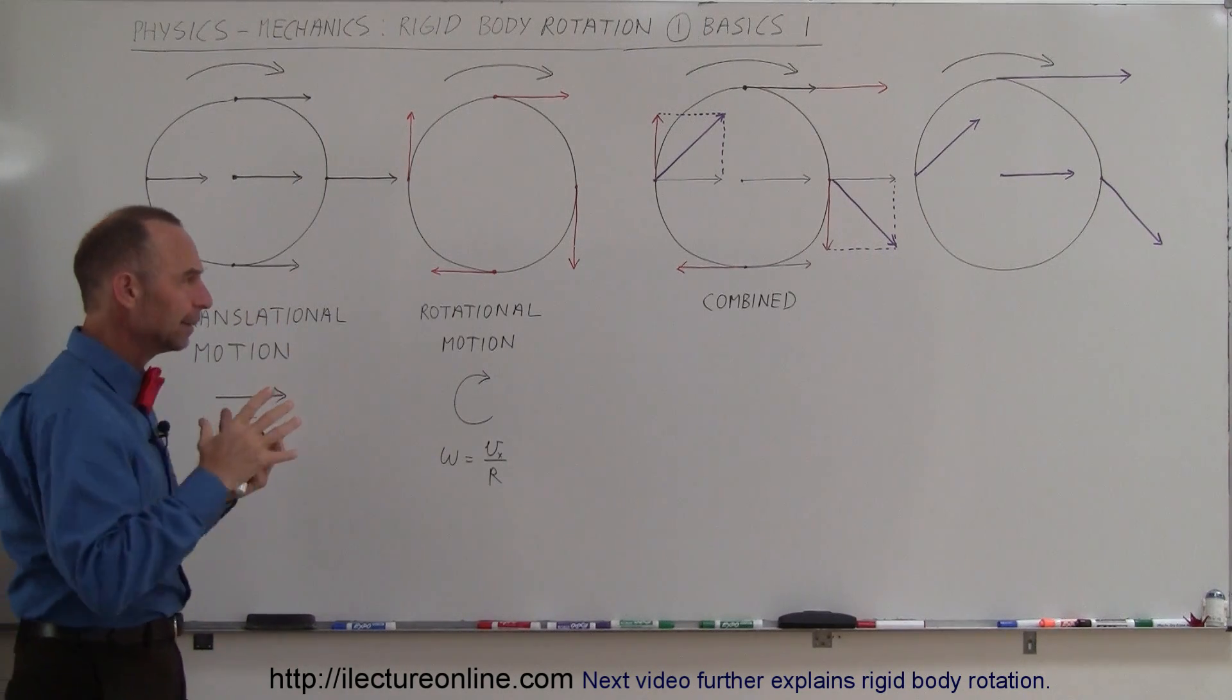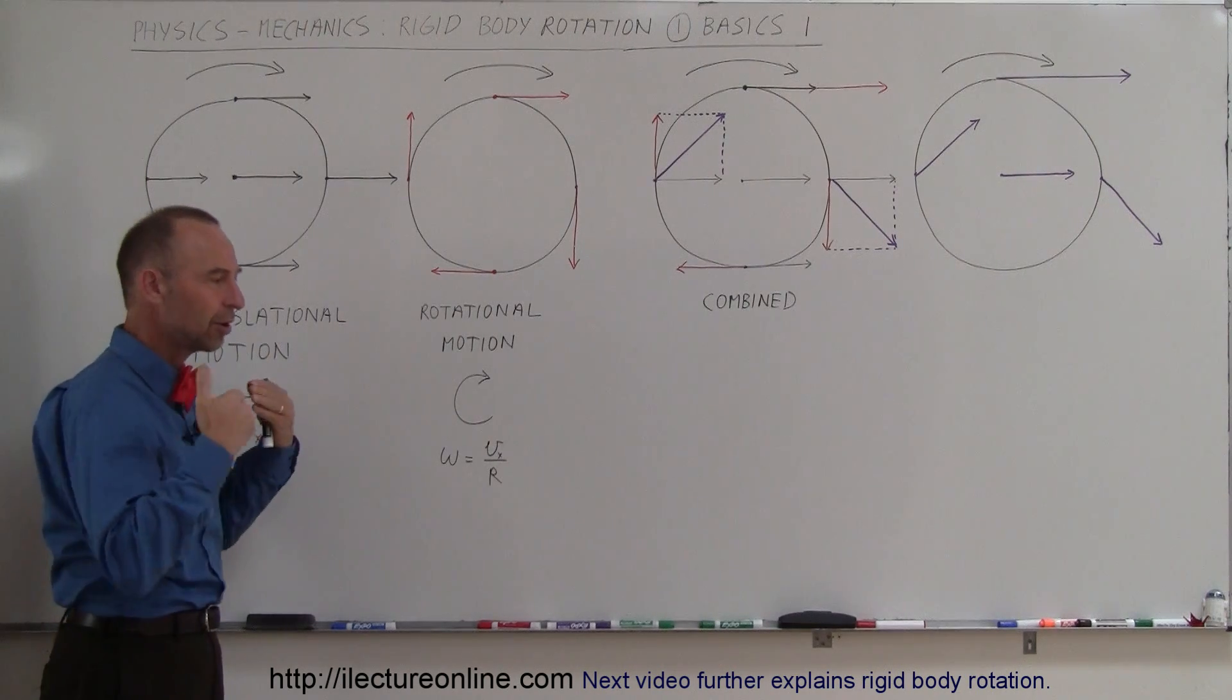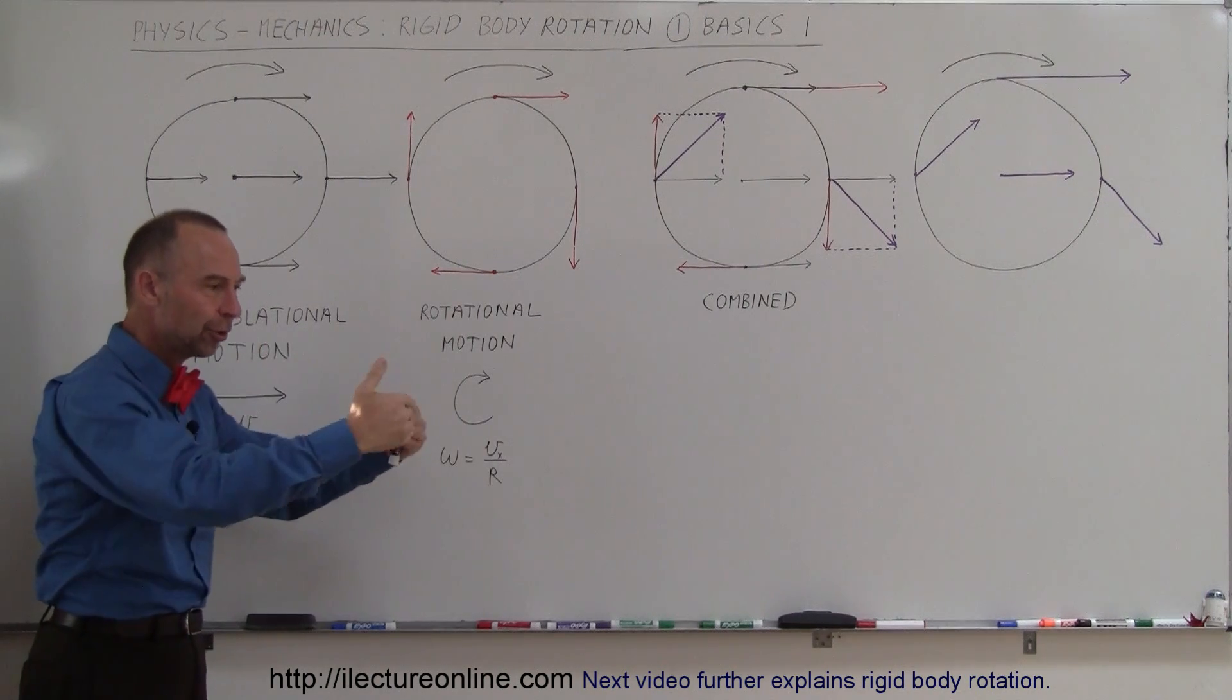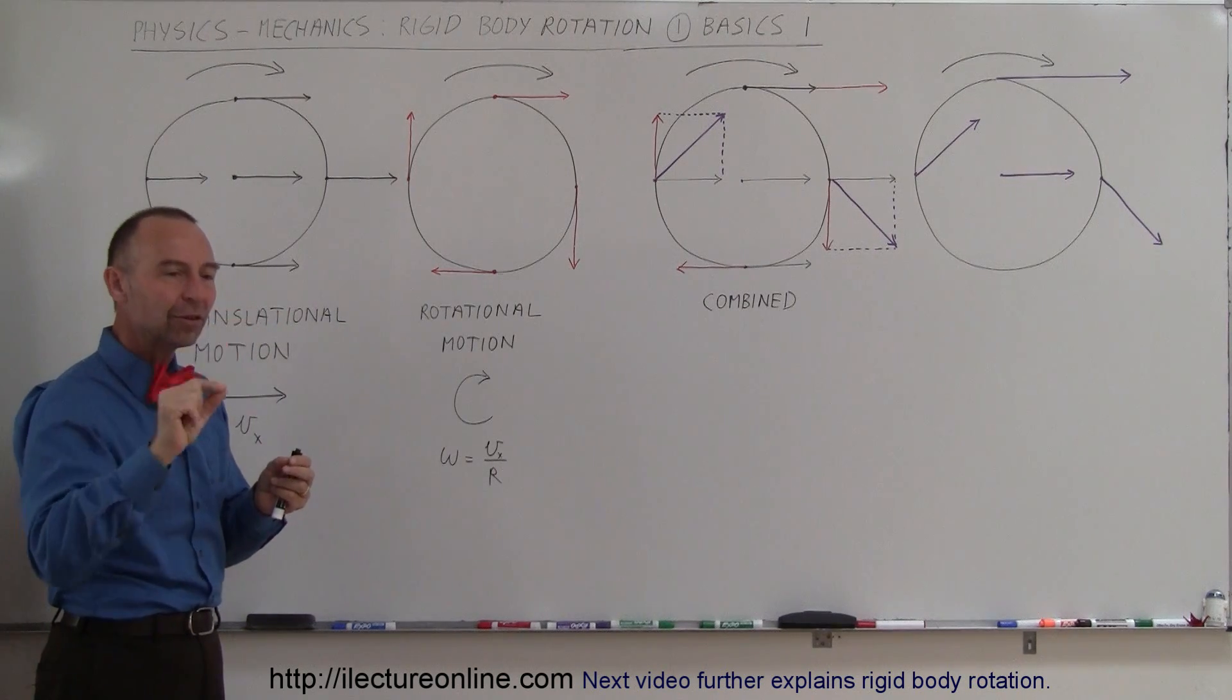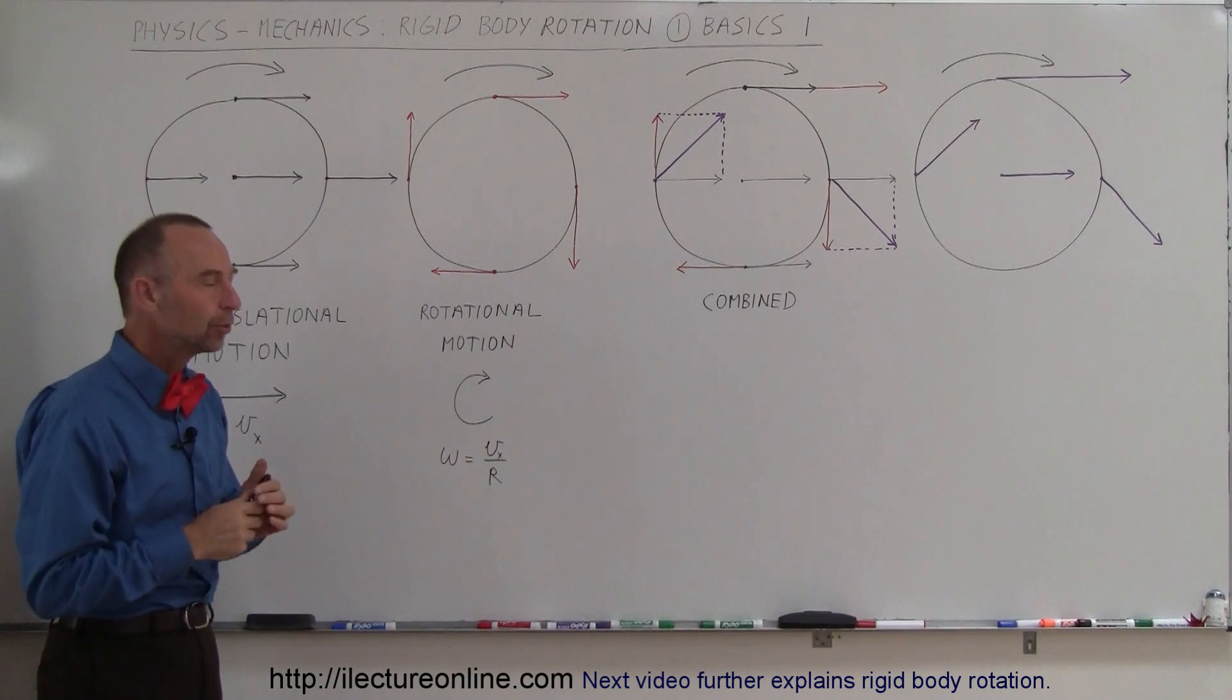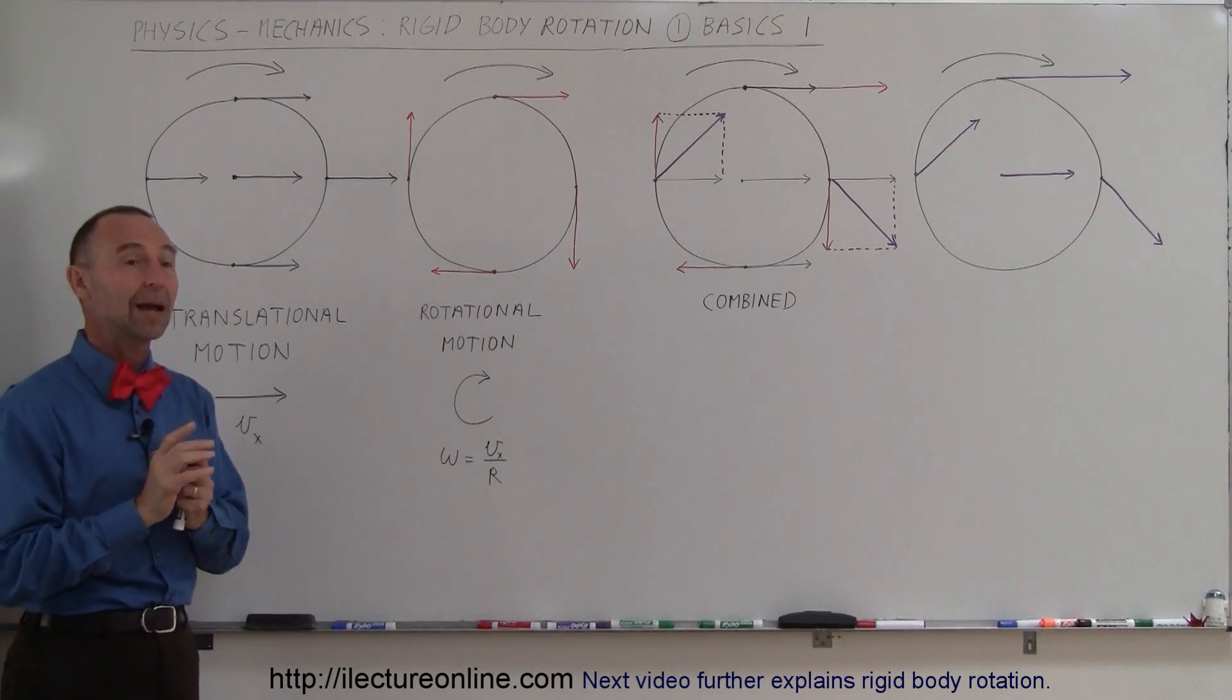So first of all, the best thing to think about it would be like having a wheel, like a tire of a car. So when a car is driving, the car is moving forward, the wheels are turning. What is each little piece of the tire doing as the car is driving and the tire is rotating? Well, there are two different kinds of motions that are happening at the same time.